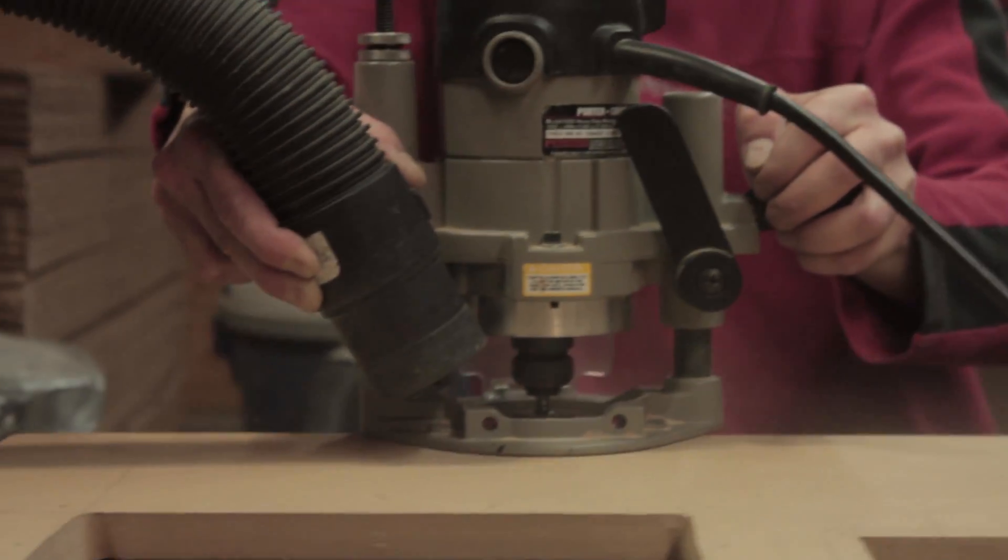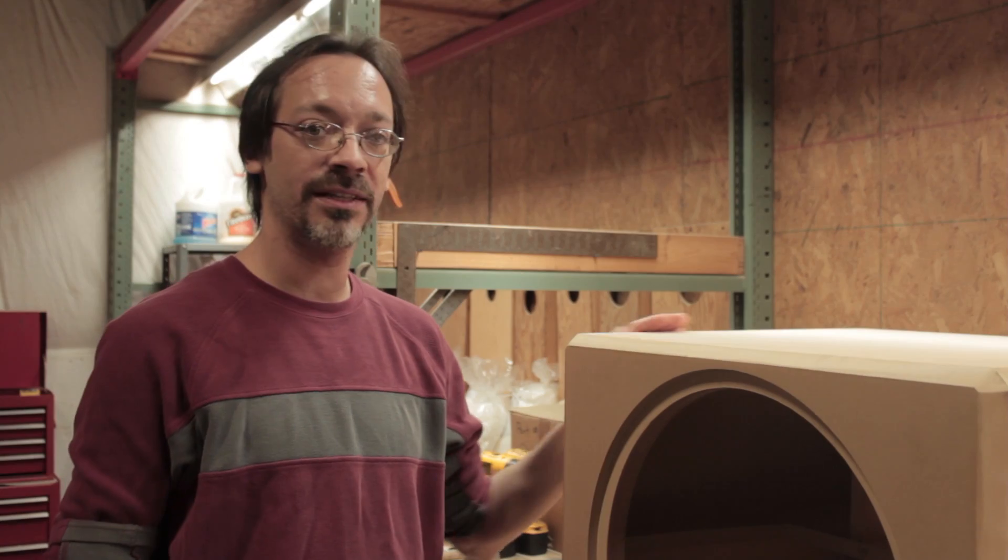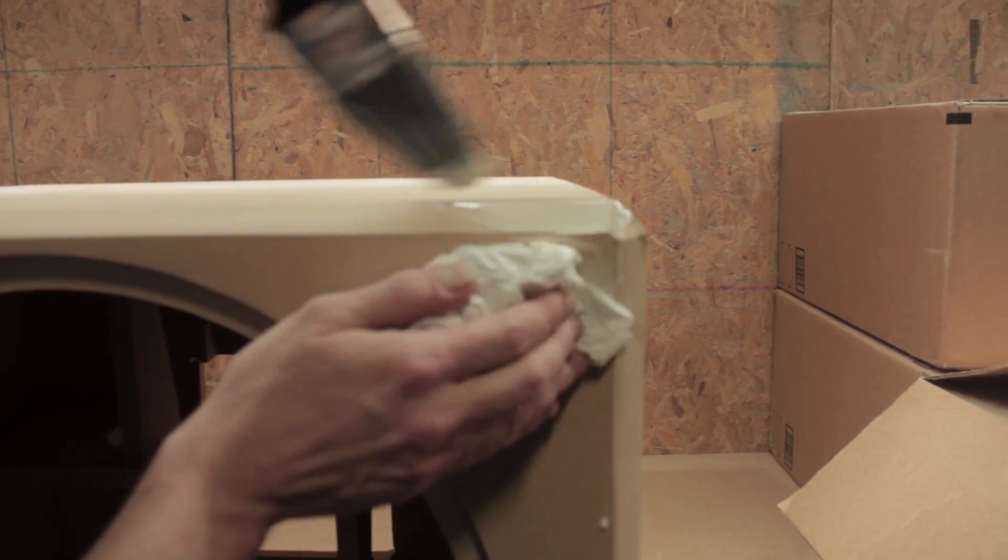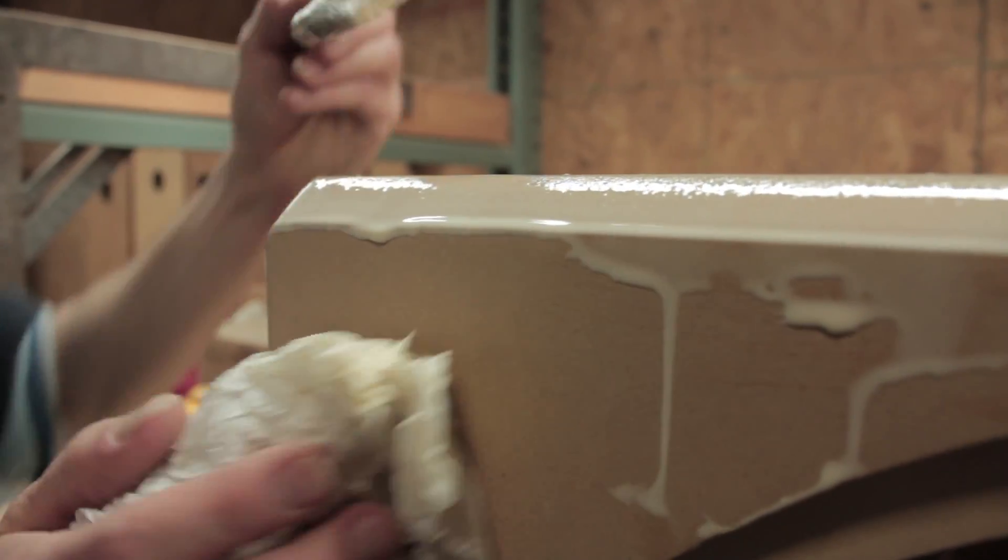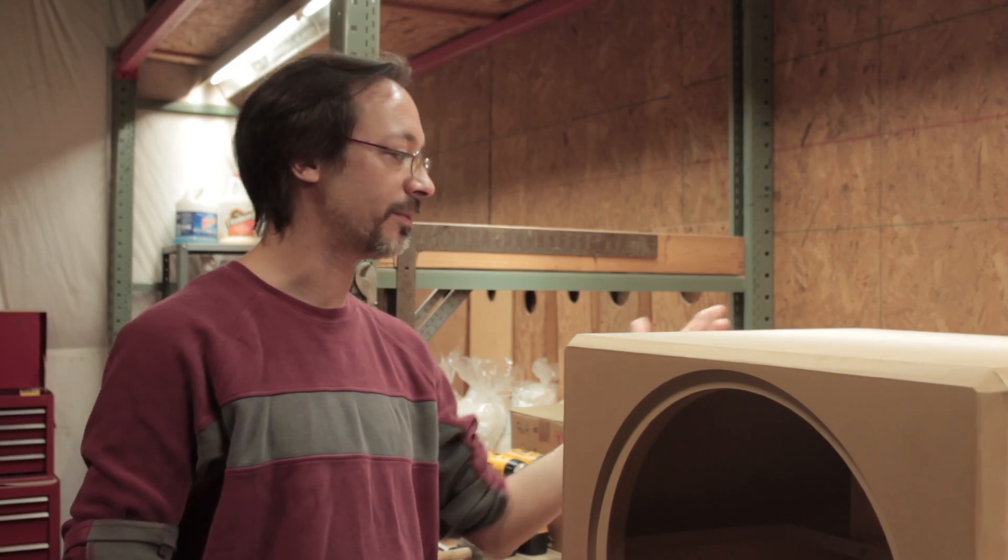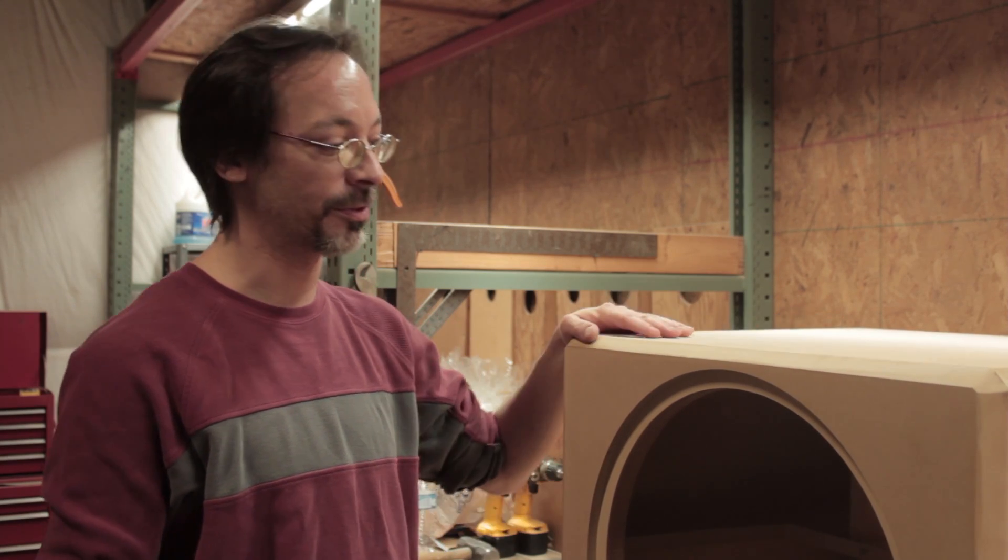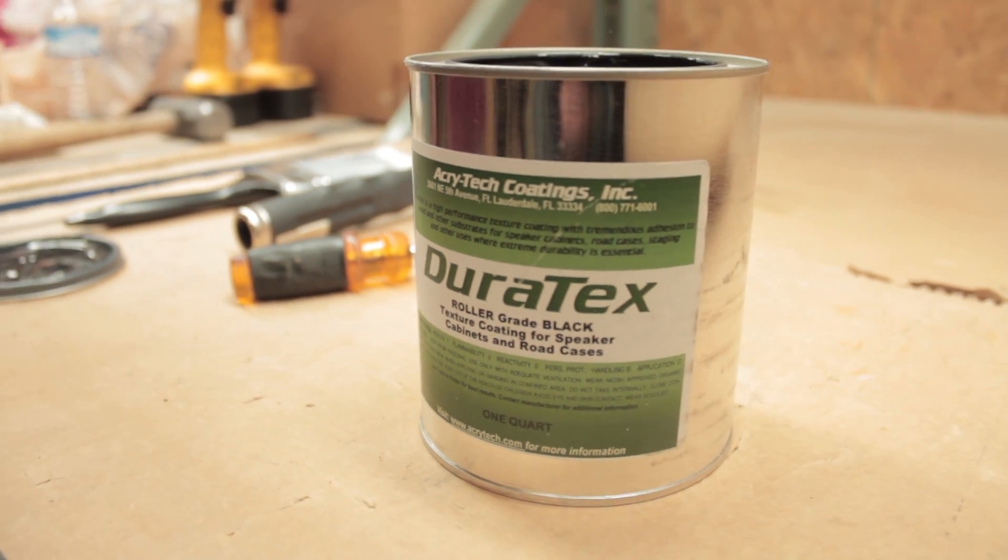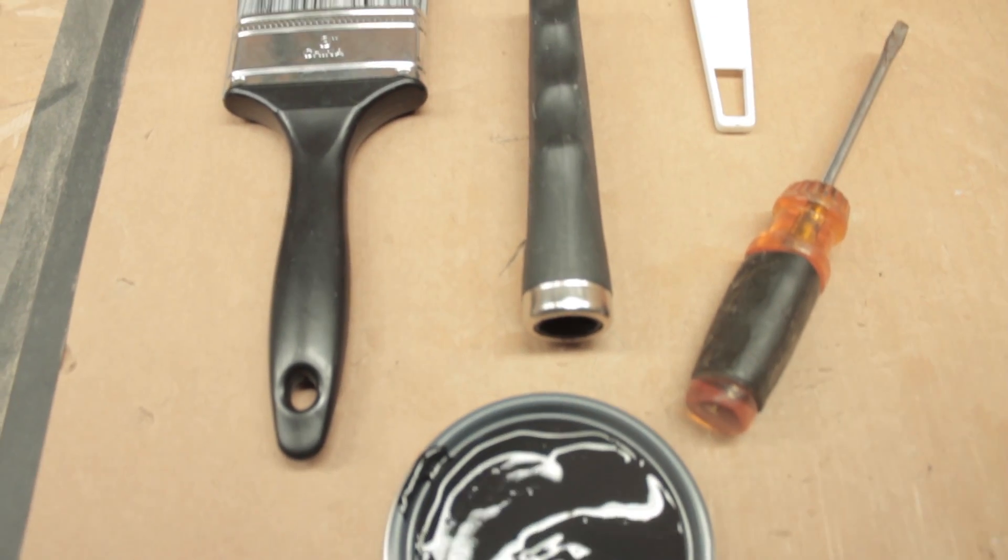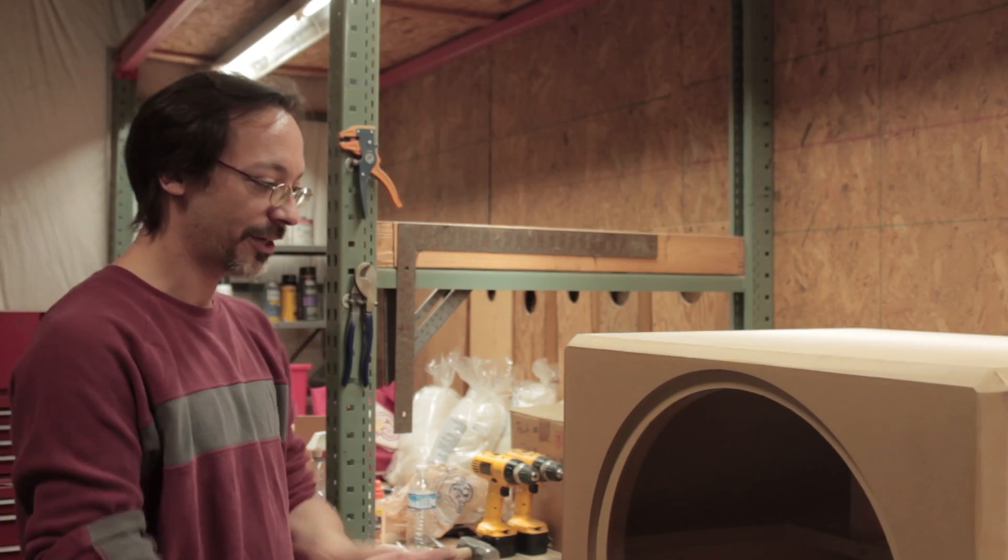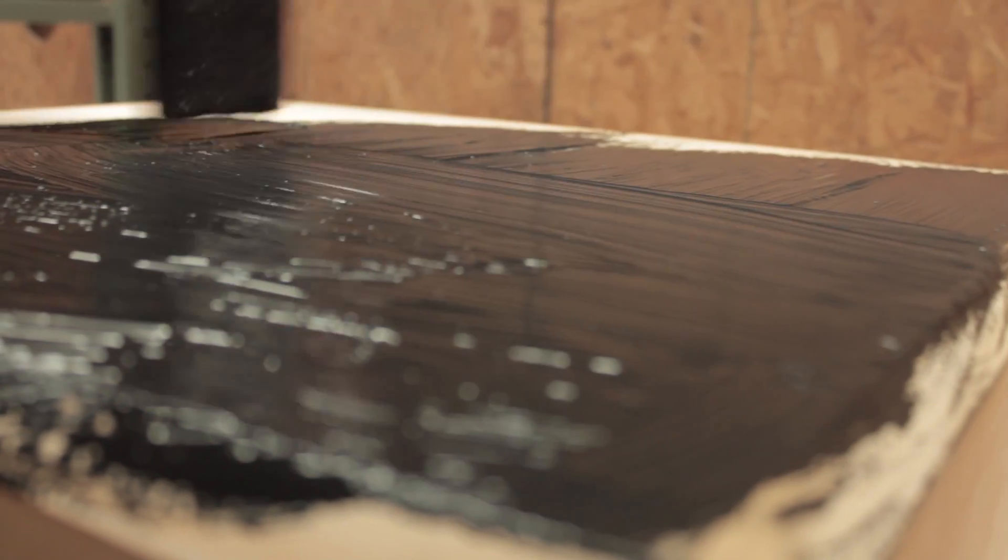I went ahead and sealed all the edges of the MDF with a mixture of water and wood glue, two parts water to one part wood glue, just painted on all the seams and wiped it off to keep it from dripping down the faces. That seals the seams so none of the grain or lack of grain transfers through the paint, which in this case we're using black Duratex which covers pretty well, but MDF does telegraph almost through anything. Now we're going to go ahead and start finishing it. Don't have to be neat at this point, just pretty fast. I'm doing one side at a time but all sides at once.